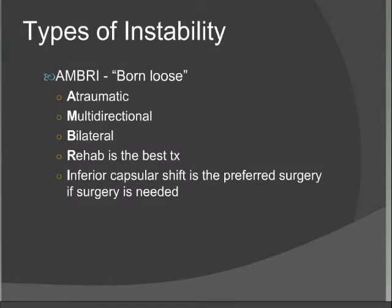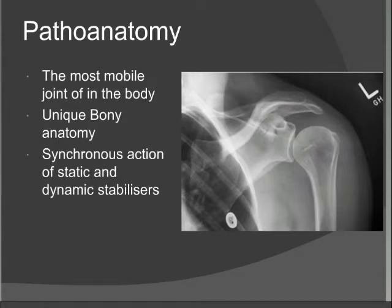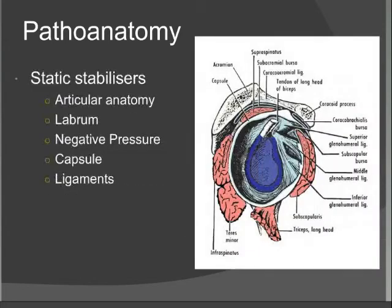The shoulder is the most mobile joint in the body and has very unique bone anatomy. To stabilise itself, it must have synchronous action between the static and dynamic stabilisers. The humeral head has three times the surface area of the articular surface of the glenoid. The glenoid has about 5 to 7 degrees of retroversion, whereas the humeral head has about 25 to 30 degrees. The labrum deepens the glenoid cavity by about 50%, prevents instability in multiple directions, and serves as an attachment to the capsule and important ligaments. The shoulder can also create a negative pressure, essentially sucking the humeral head into the glenoid cavity.